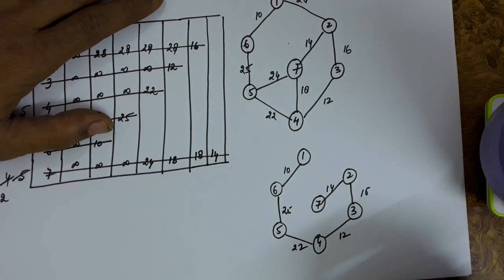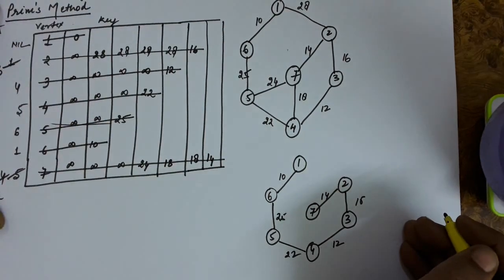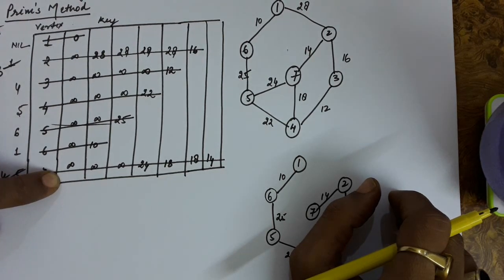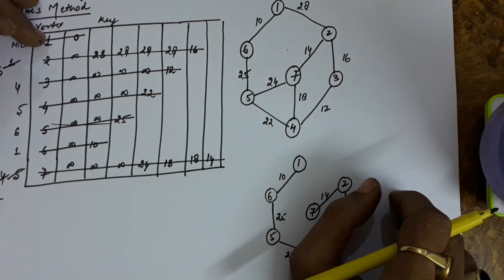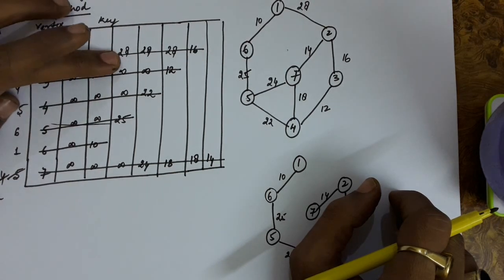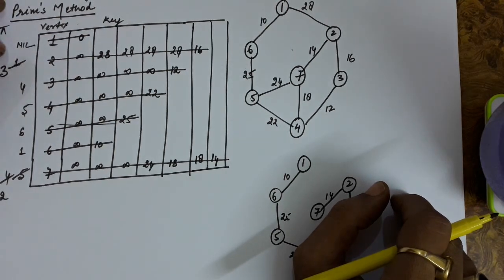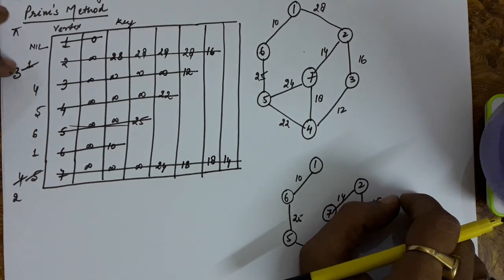This is the minimal spanning tree. The procedure is simple: maintain a priority queue, set the key value of the root vertex as 0, set all other vertices' keys as infinite. Remove the smallest key value vertex and from that vertex explore other vertices still in the queue. If you find a shorter key value, update it and update the predecessors. Predecessors play a vital role because we draw the minimal spanning tree using them.